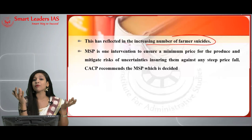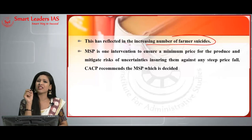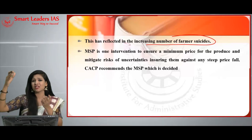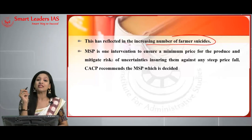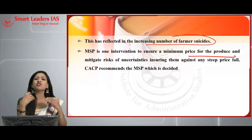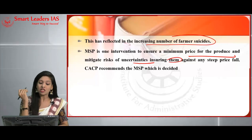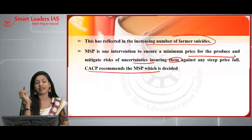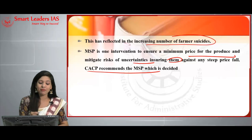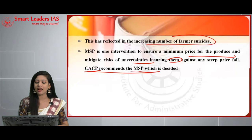In states like Maharashtra, the Vidarbha and Marathwada regions rank number one in farmer suicides, both male and female. This situation is leading to lower productivity and the development showing a downward trend. Thus, MSP — minimum support price — is one intervention to ensure a minimum price for produce and mitigate the risk of uncertainties, ensuring farmers against any steep price fall. The CACP (Commission for Agriculture Cost and Prices) recommends the MSP prices.